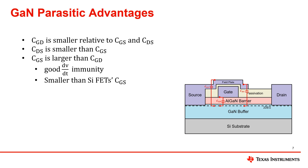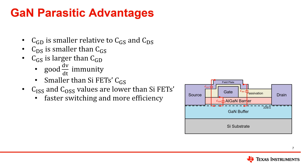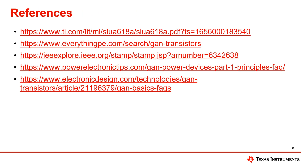With these smaller capacitances, the values for input and output capacitances, CISS and COSS, are lower, which is the key to faster switching and more efficiency. More information can be found in these useful links.